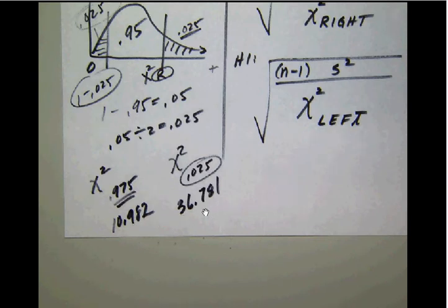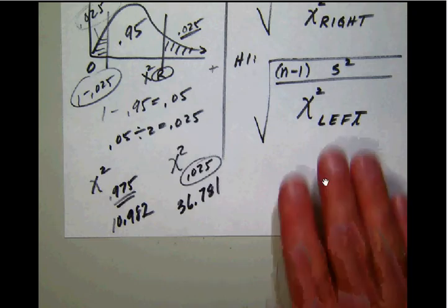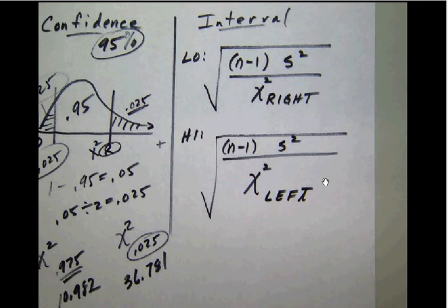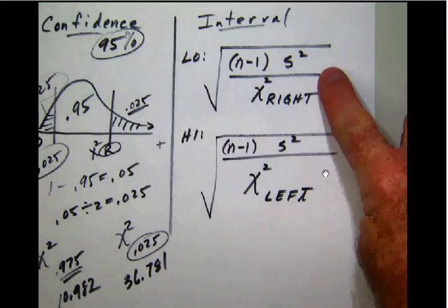Here's our two chi-square values that we're going to need. The chi-square right value goes in our formula. Notice this time we don't have an error calculation. When we go to the calculation part of this, we simply go right to the end of the interval. There is no in-between step.